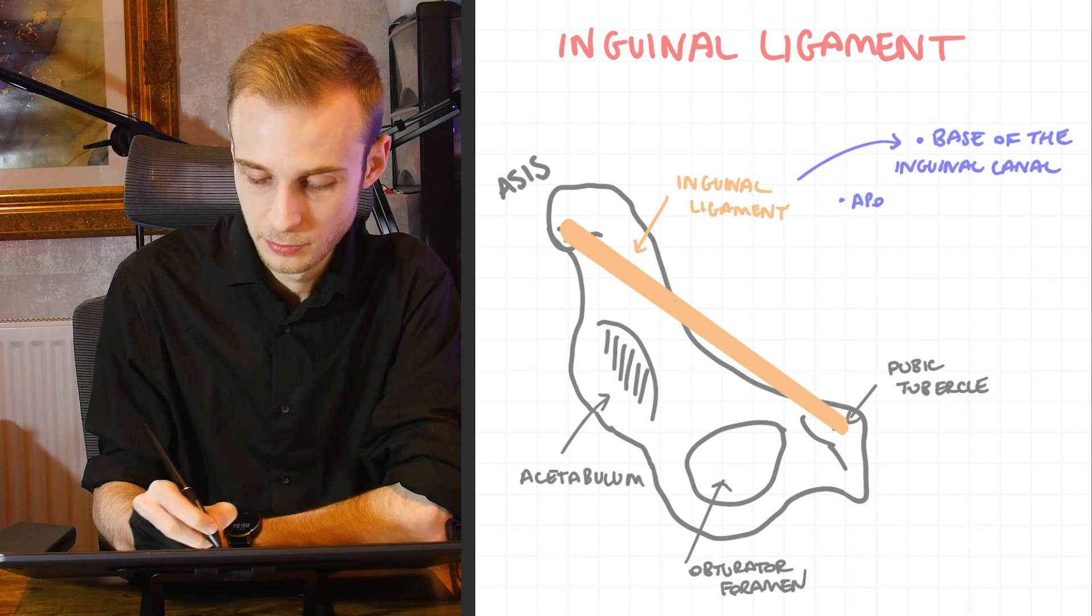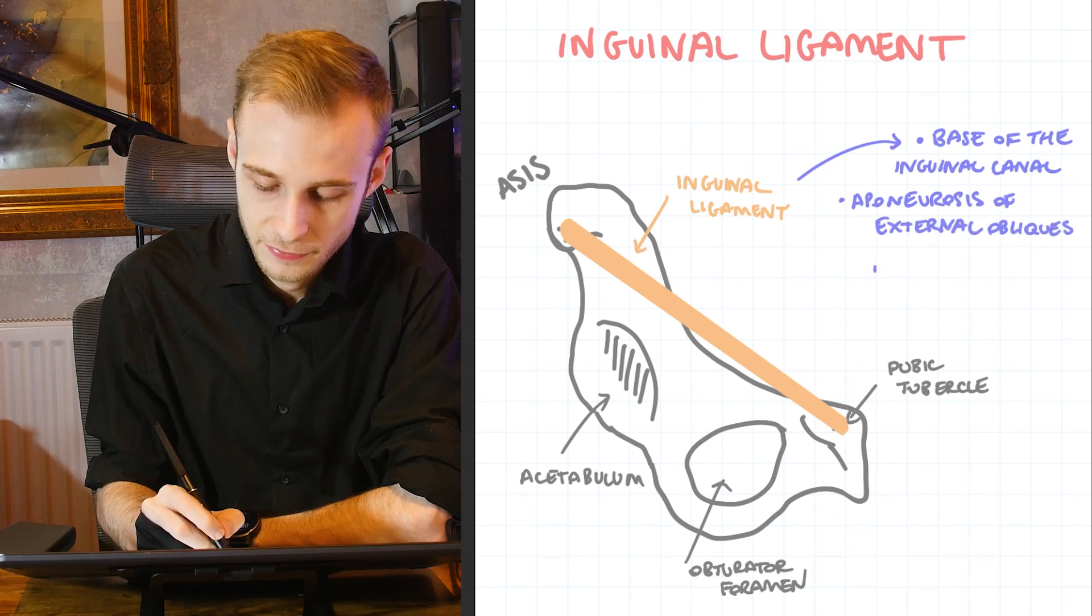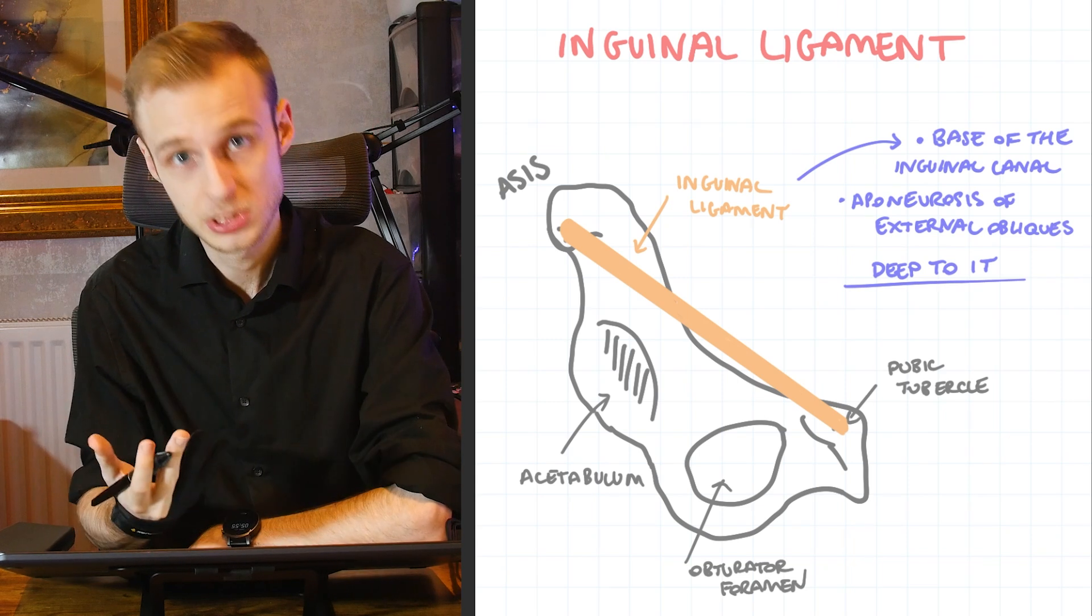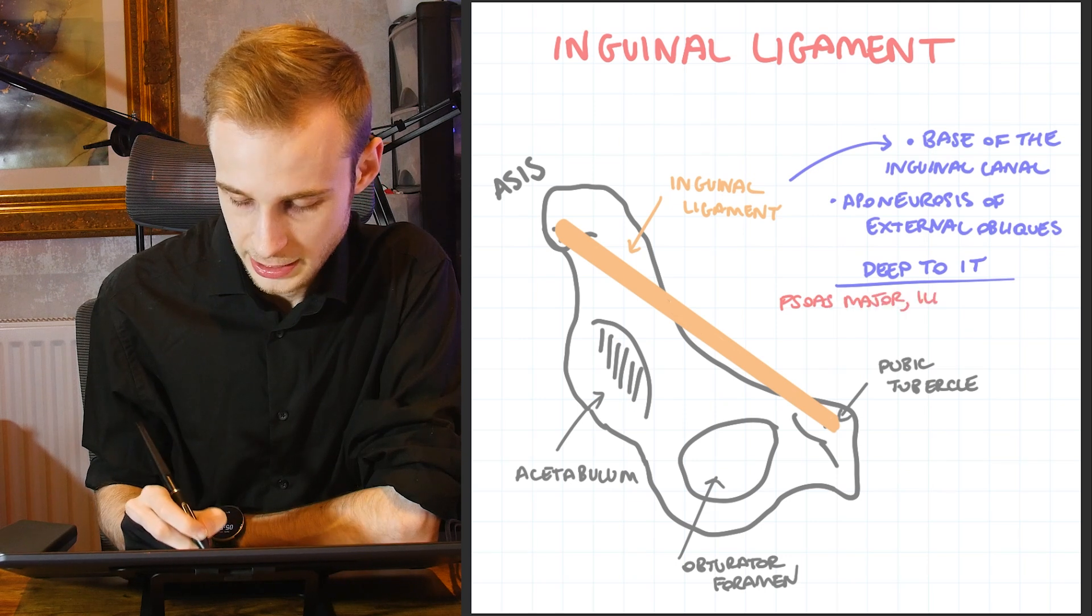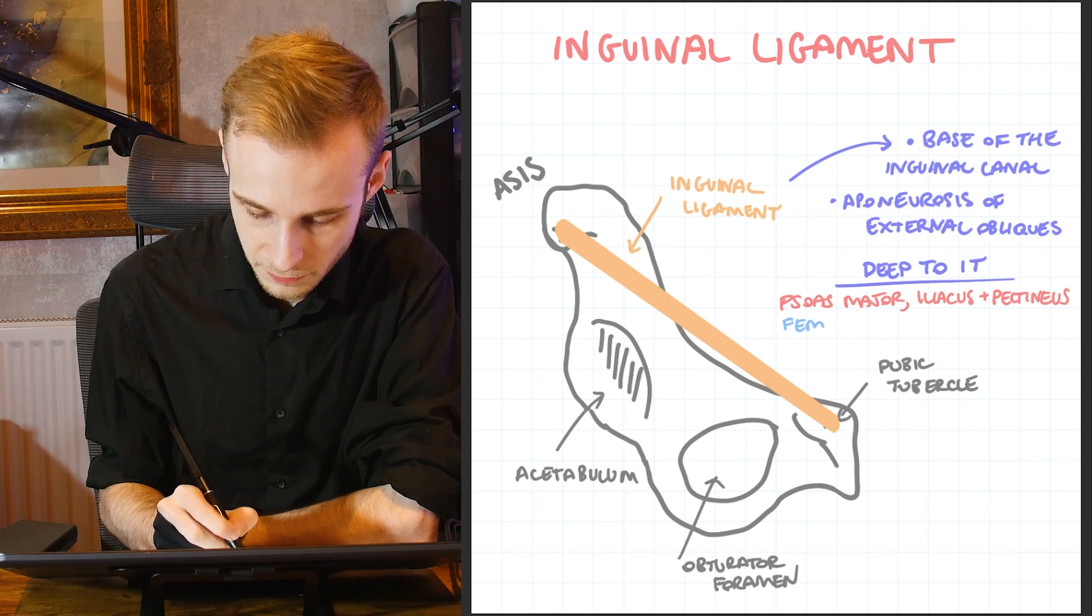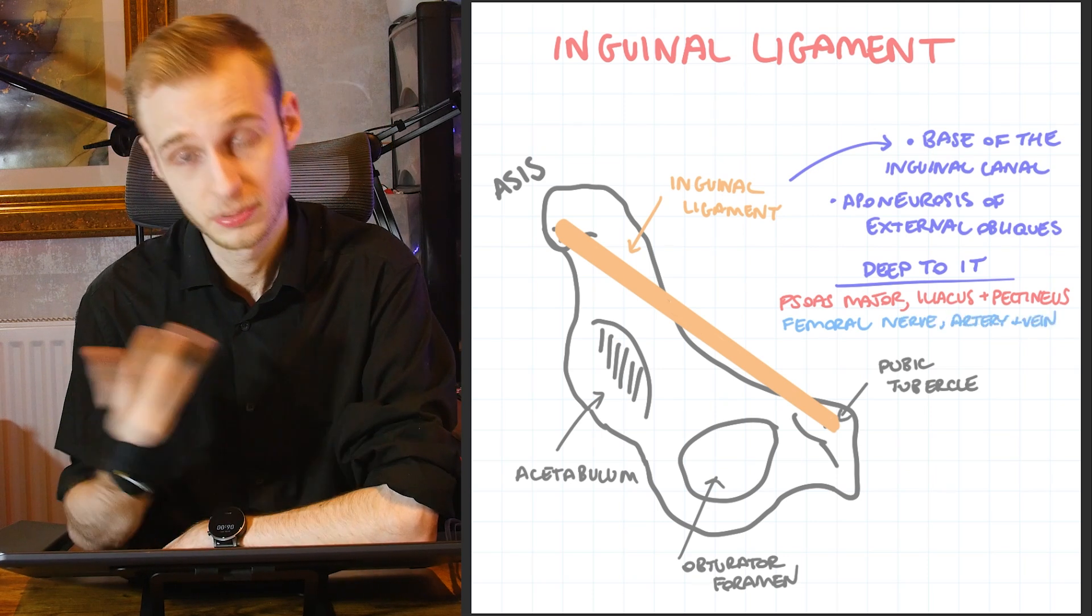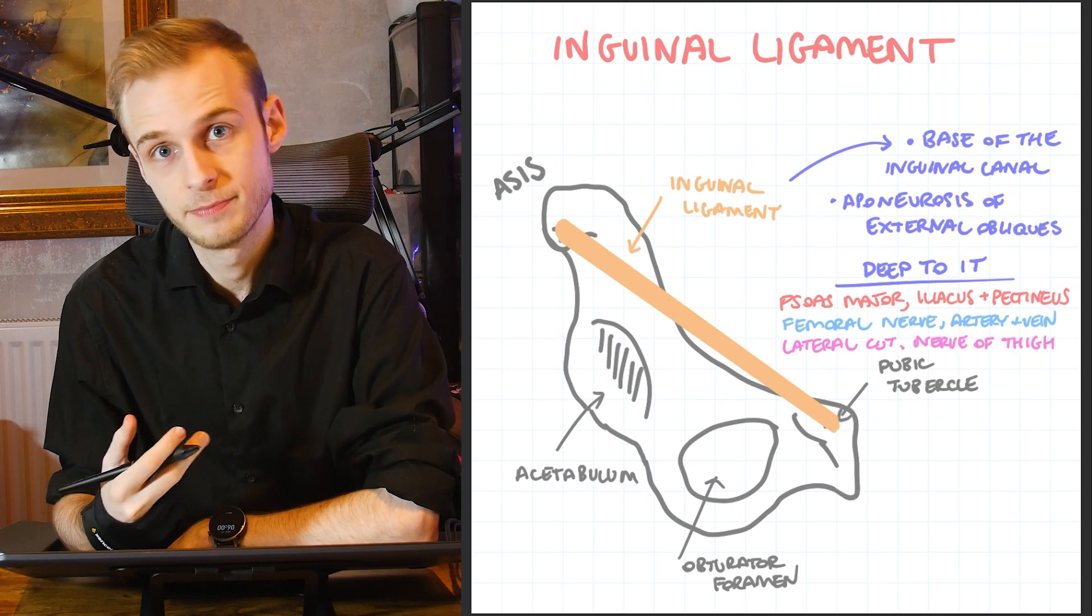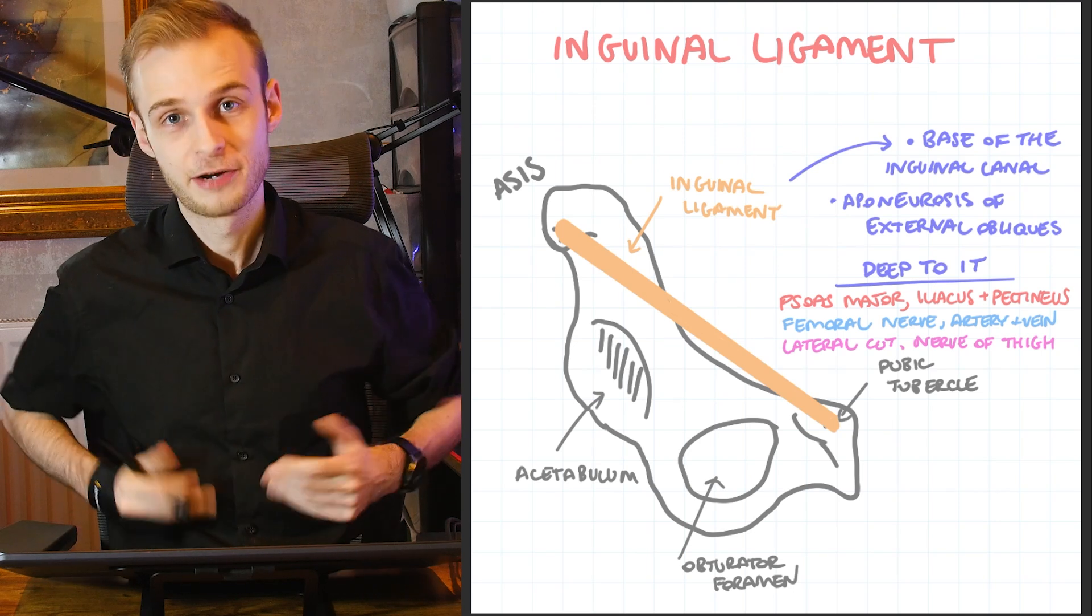It's formed from the aponeurosis of the external oblique muscles. It's got some important structures that run deep immediately to the inguinal ligament. I'm just going to change my color very quickly because we've got three muscles that lie deep to it, which are sartorius major, iliacus, and pectineus. Then very importantly we've got our femoral bundle—the femoral nerve, artery, and vein. And then lastly, the lateral cutaneous nerve of the thigh, which is classically implicated in meralgia paresthetica or as I was taught, Calvin Klein syndrome, from people wearing underwear or jeans that are too tight.